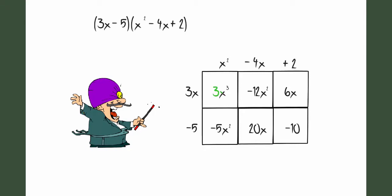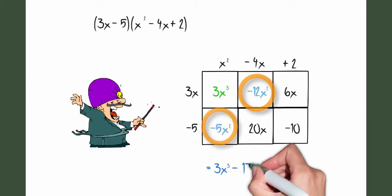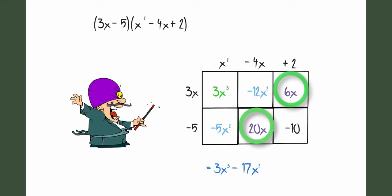I'm going to simplify that. So first I'll have 3x to the third. Well, notice that I've got two terms with x squared in them, so I'll be combining those to get negative 17x squared. I also have two terms that contain an x, so that would be 26x. And I'll, of course, have the negative 10.